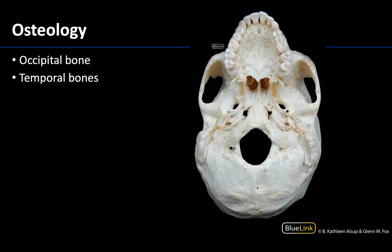I want you to practice looking at these structures from as many points of view as possible, because just because you understand how something looks from the posterior view doesn't mean you'll be able to identify structures from another view — things can look quite different. We are now looking at an inferior view of the cranium. We know it's not the full skull because we don't have the mandible. You can see that bump again with the occipital bone, and the temporal bone is just lateral to the occipital bone, with that mastoid process visible on either side.